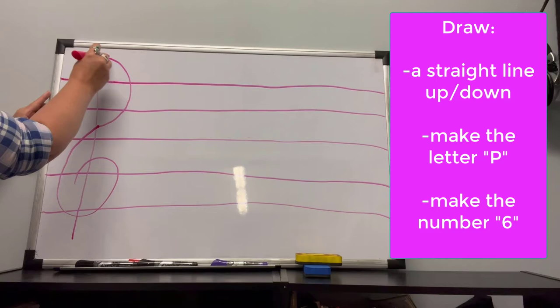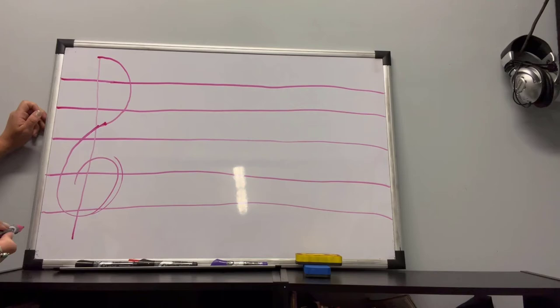That's kind of what treble clef looks like. So line up, make a P, keep going, number 6. I know that wasn't perfect but like I said it doesn't need to be perfect.